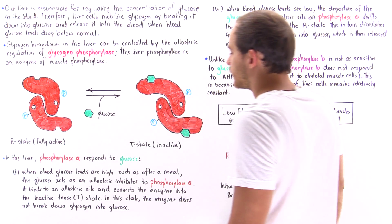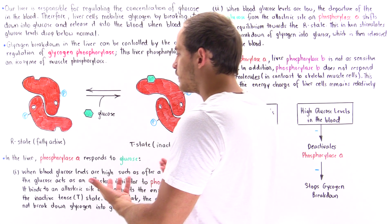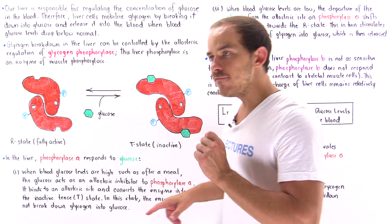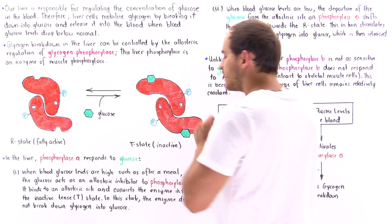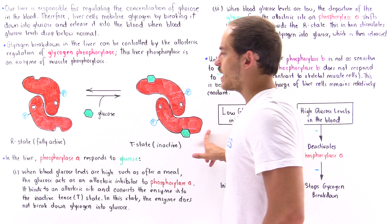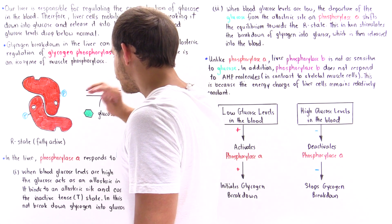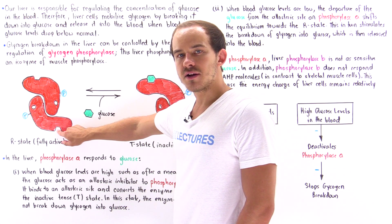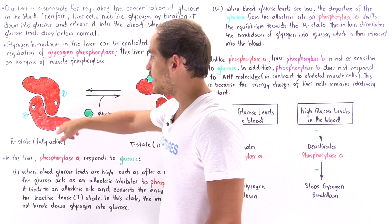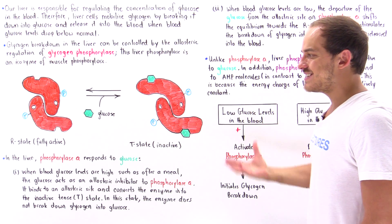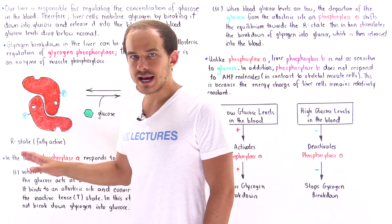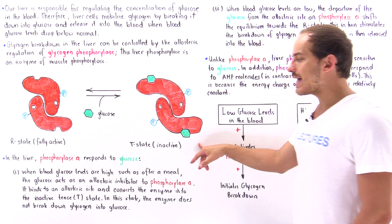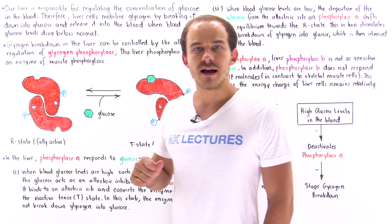This diagram describes the fully active R state of liver phosphorylase A and the inactive T state of liver phosphorylase A. When glucose molecules bind into specific allosteric regulatory sites, there is a transition from the R state — the fully active state where enzyme activity is high — to the T state, the inactive state where activity is low.